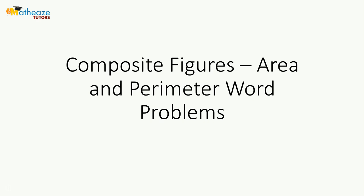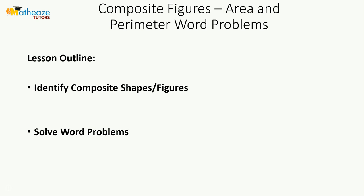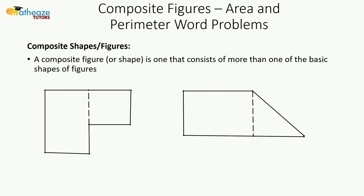We will be looking at composite figures, with our focus on area and perimeter word problems. We're going to identify composite shapes and solve word problems that deal with those. A composite figure is one that consists of more than one basic shape — for example, a rectangle combined with a square, or a rectangle combined with a triangle.